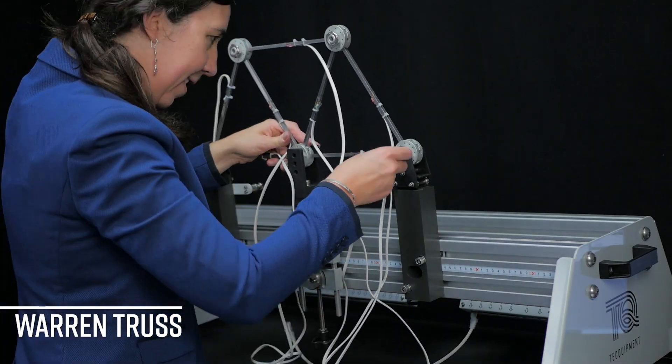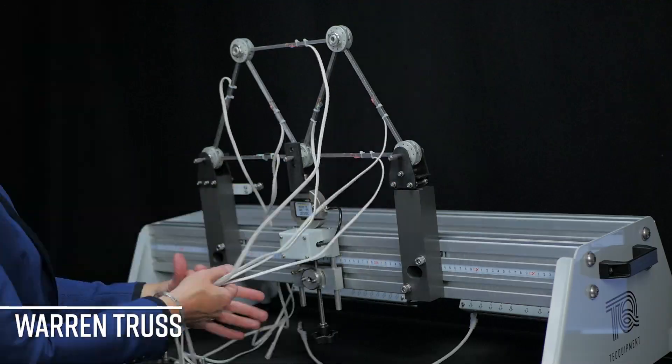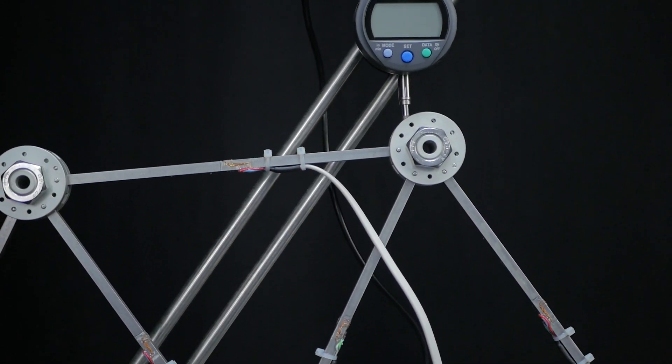The Warren truss, as you can see here, looks at the relationship between the applied load and the forces in the member for the Warren girder.